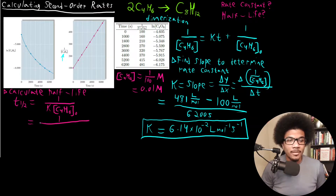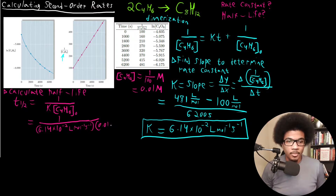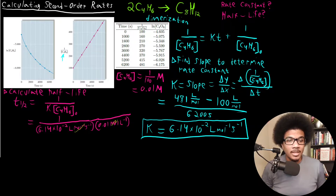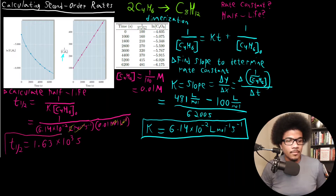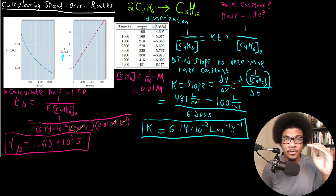Plugging in: T₁/₂ = 1 / (6.14 × 10⁻² L/mol/s × 0.01 mol/L). Checking units: moles cancels out, liters cancels out, and you're left with just seconds — which makes sense because the half-life has to be a time. So T₁/₂ = 1.63 × 10³ seconds. This is the time it would take for the initial concentration to decrease by half.